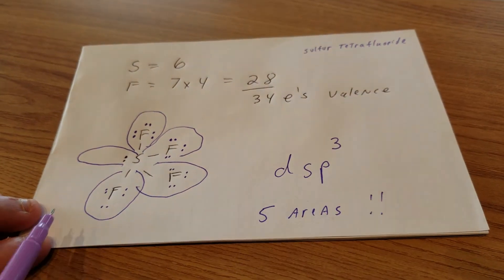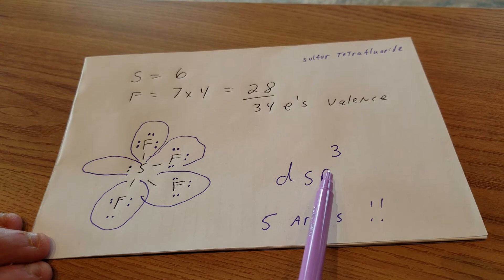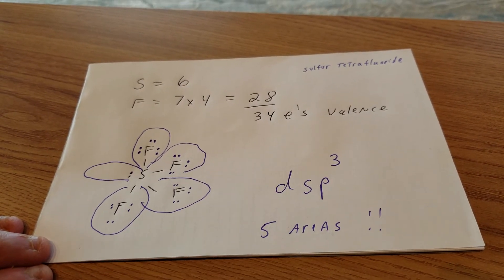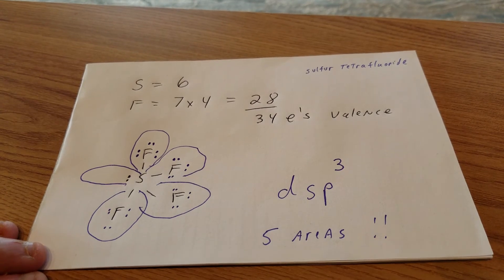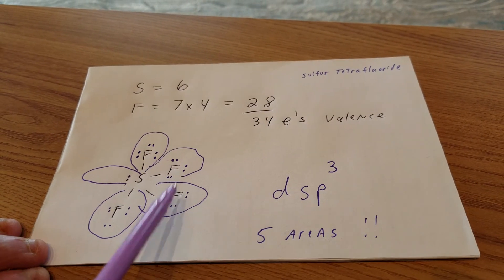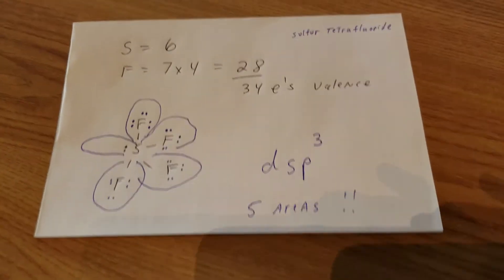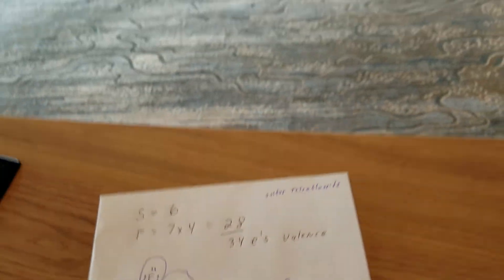If you look at dsp³, a nice little trick is to think of it as three areas of P, one area of S, and one area of D. That gives you five areas of space. Five areas of space coincides with dsp³.